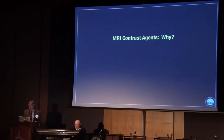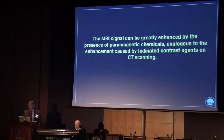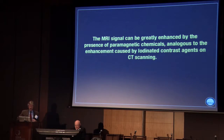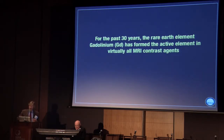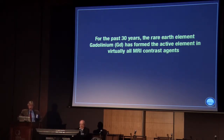We use contrast agents in MRI quite a bit. The MRI signal can be greatly enhanced by the presence of paramagnetic chemicals, analogous to the enhancement caused by iodinated contrast agents on CT scanning — analogous in many ways, but with lots of differences. For the past 30 years or so, the rare earth element gadolinium has formed the active element in virtually all MRI contrast agents, and that remains the case even today.